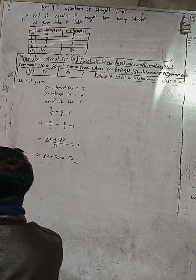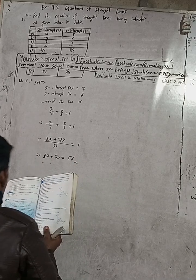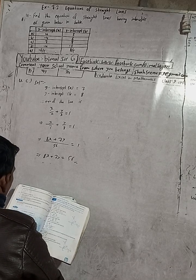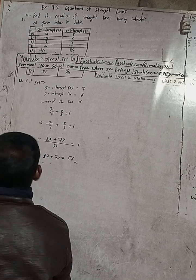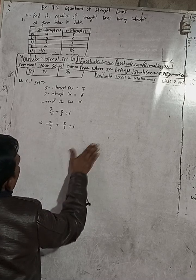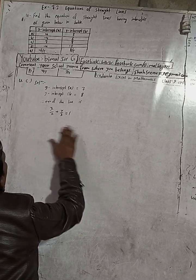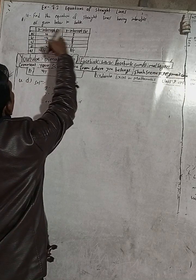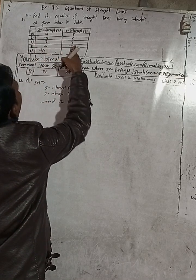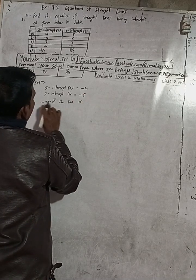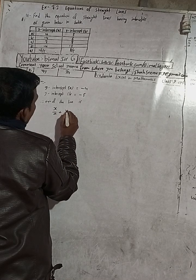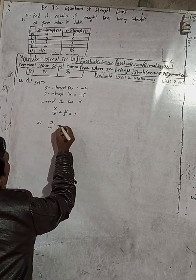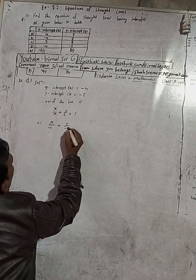The answer for 4C is 8x + 7y = 56 — correct answer. Now part D. For D, x-intercept is minus 4 and y-intercept is minus 5. Therefore, the equation of the line is x/a + y/b = 1. Substituting A = minus 4 and B = minus 5 gives x/(−4) + y/(−5) = 1.